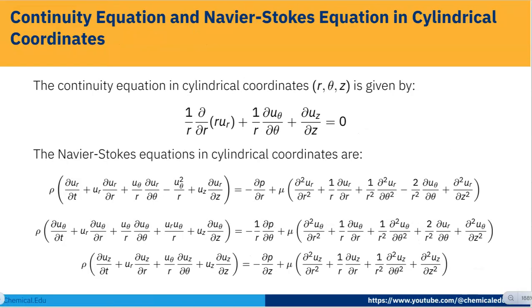The continuity equation in cylindrical coordinates R, theta, Z is given by: (1/R) ∂/∂R(R·U_R) + (1/R) ∂U_theta/∂theta + ∂U_Z/∂Z = 0. We also have three momentum equations: the R-direction momentum equation, the theta-direction momentum equation, and the Z-direction momentum equation. These are all our governing equations — the continuity equation and the momentum equations.